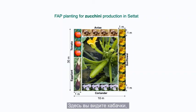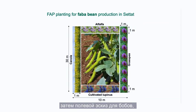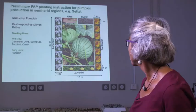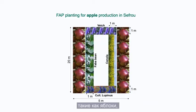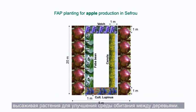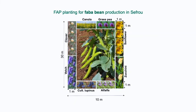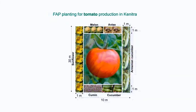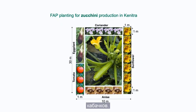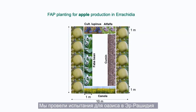We now have zucchini also in the semi-arid region. This is the field sketch for fava bean. Now we have pumpkin, melon, and pumpkin. Moving to the mountainous region, we did orchard crops like apple, with habitat enhancement plants between the trees. We have cherry, fava bean, pumpkin, and zucchini. In the region with adequate rainfall, we have fava bean, tomato, eggplant, and zucchini. And in the oasis we did in Morocco in Errachidia — apple, okra, and zucchini.